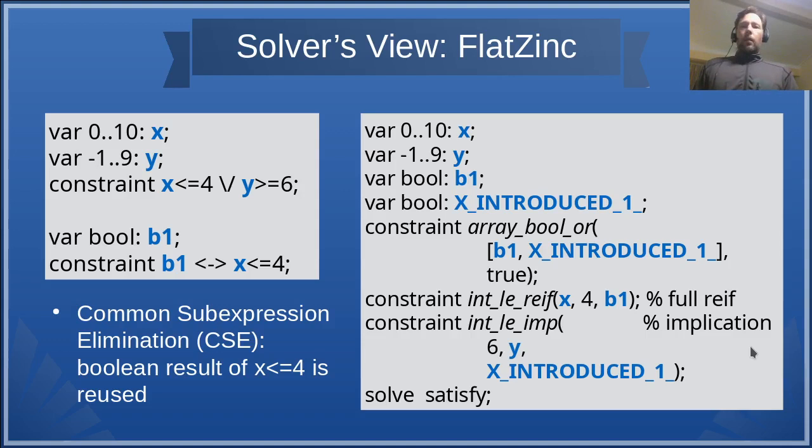The small model on the left has a disjunction of two inequalities. But it also has a Boolean variable which explicitly reifies the result of the left inequality. The FlatZinc model from this has the disjunction translated to array_bool_or, and then there are two predicates relating a Boolean variable to each of the inequalities.